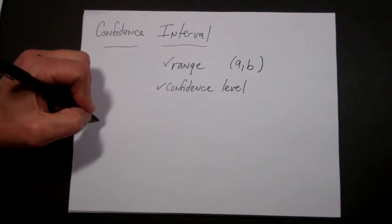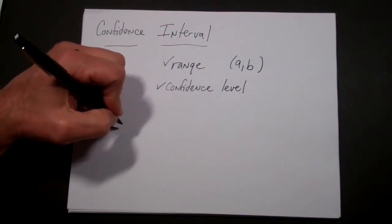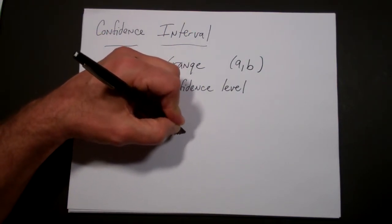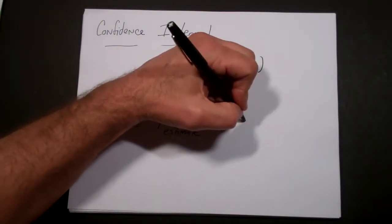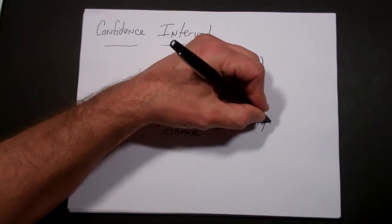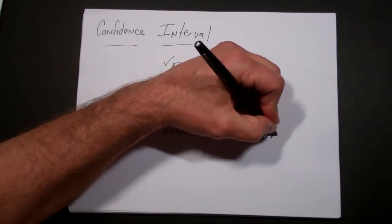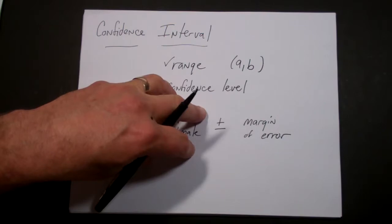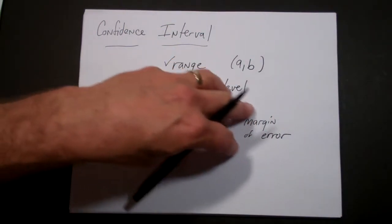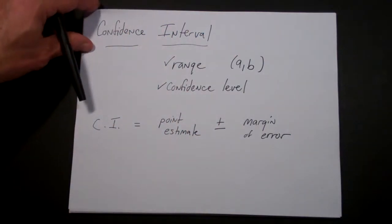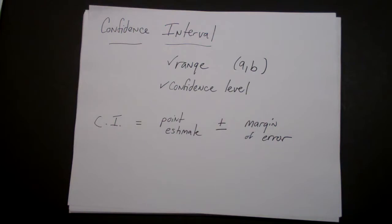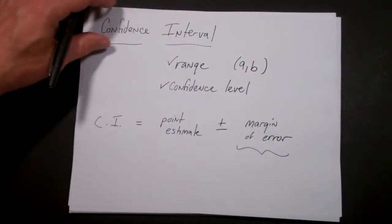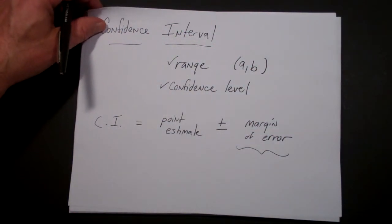The other thing about a confidence interval is that it's really made up of two parts. It's made up of a point estimate, plus or minus what's called a margin of error. The margin of error gives you an idea of, given the point estimate, whether there is a range of numbers within which the true value will often fall. In the next video we talk about how we calculate what this margin of error means.